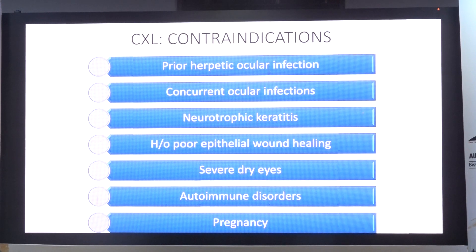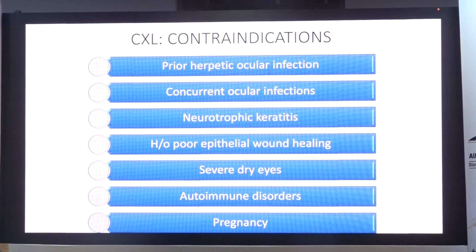Some contra-indications to keep in mind when performing collagen crosslinking: if there is a prior therapeutic ocular infection, one has to be careful because UV radiation can cause reactivation of infection. A concurrent ocular infection must be treated first before proceeding with CXL. Neurotrophic keratitis, poor epithelial wound healing, and dry eyes should all be addressed — the ocular surface should be optimized before proceeding with collagen crosslinking.